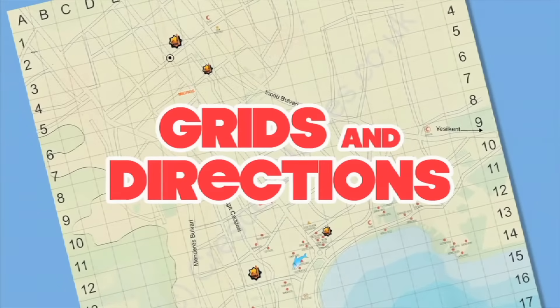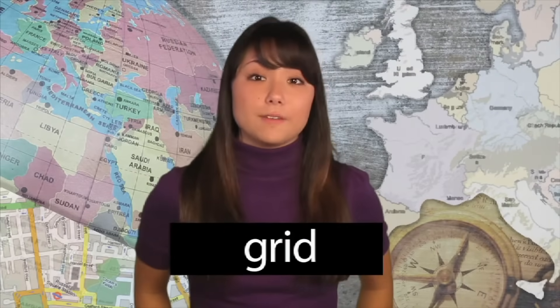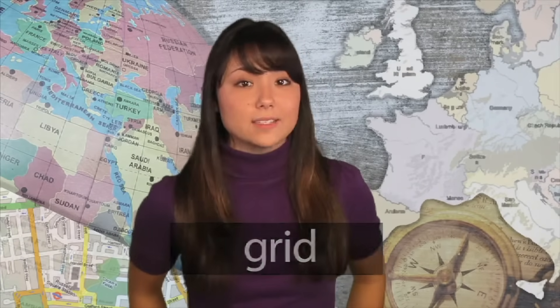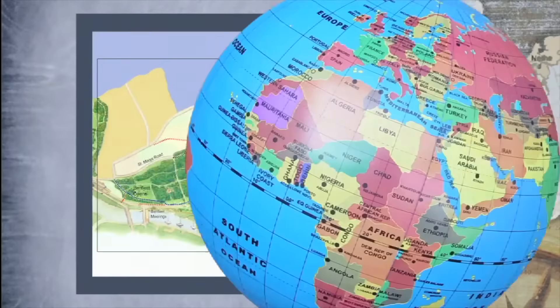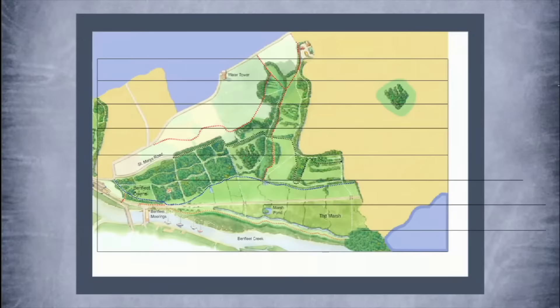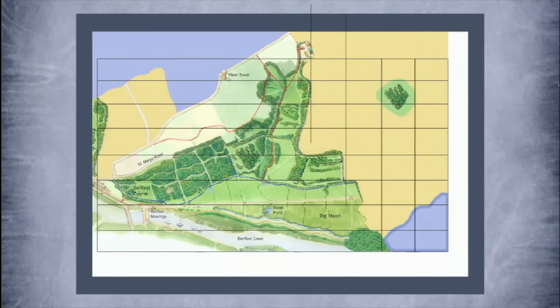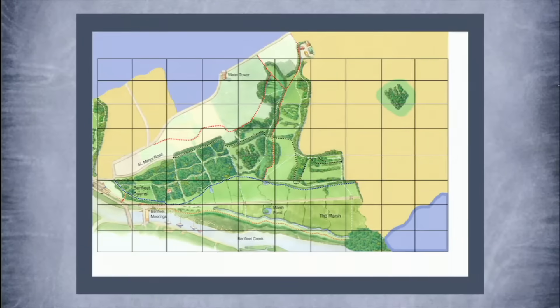Let's talk about grids. To help you read a map more easily, many maps are broken up by a grid. A grid is a series of vertical, or up and down lines, and horizontal, or side to side lines. These lines come together to make squares on the map. Letters and numbers are used to name the squares. The squares aren't really on the land itself — the grids are used to make it easier to locate or find places on the map.